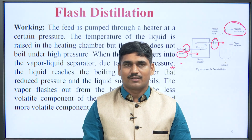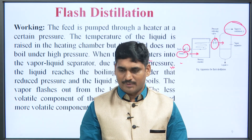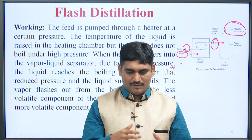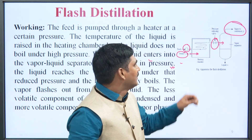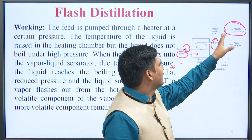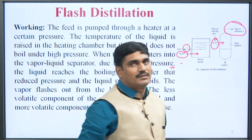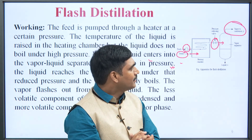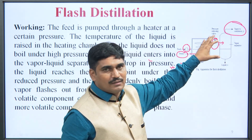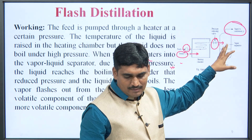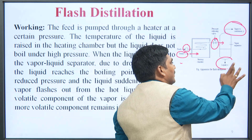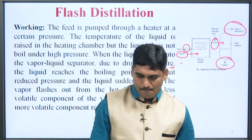The vapour flashes out from the hot liquid. The less volatile component condenses and the more volatile component remains in the vapour phase. This vapour passes through the condenser and the condensed vapour is collected. The liquid remaining in the separator is collected from the bottom of the separator.